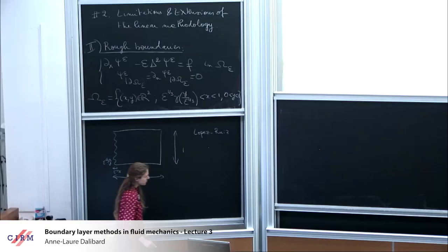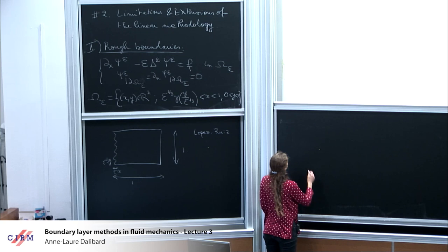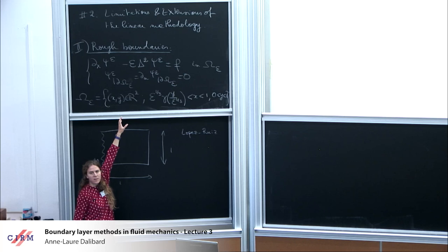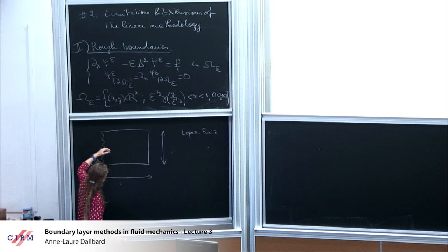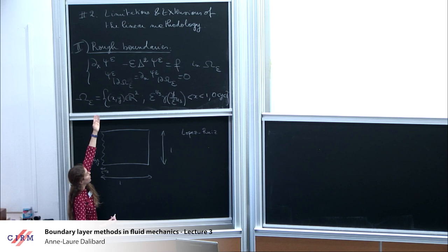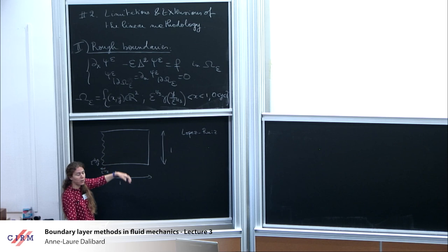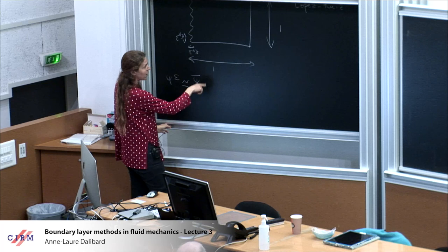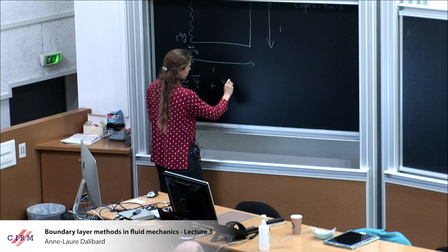The ε^(1/3) scaling appears because it's exactly the scaling of the boundary layer computed yesterday — it's the richest scaling because the small-scale structure on the boundary is precisely the same as that dictated by the boundary layer analysis. So there is an interaction between the scale dictated by the linear problem, which has small scales from the boundary layer, and the small scales in the boundary itself.